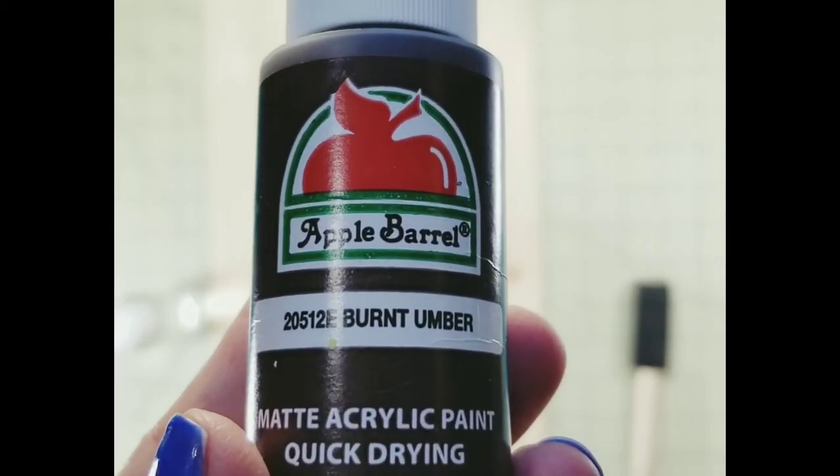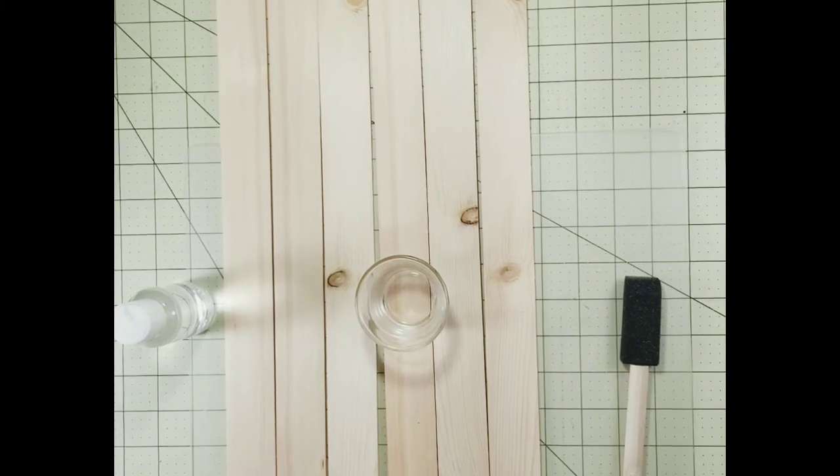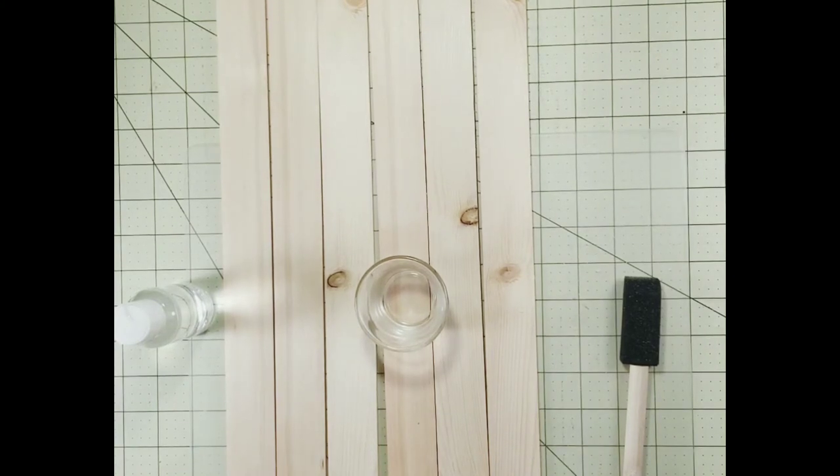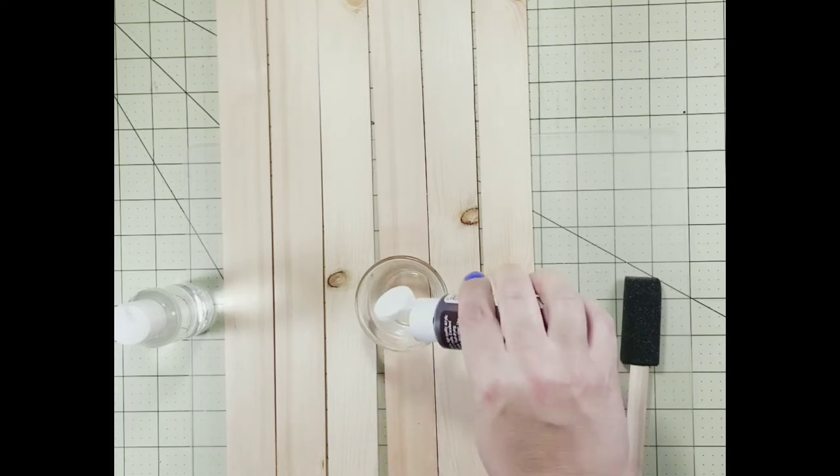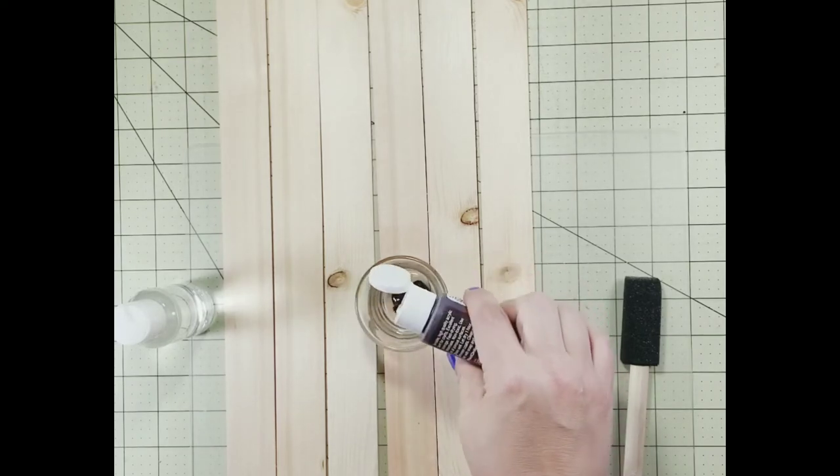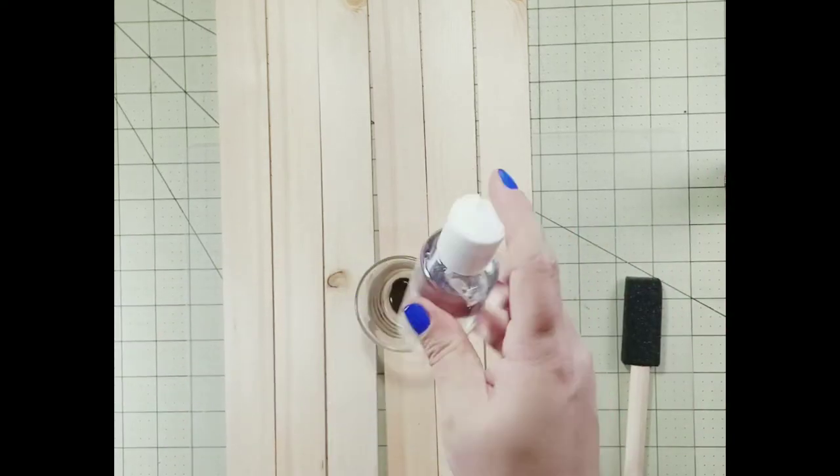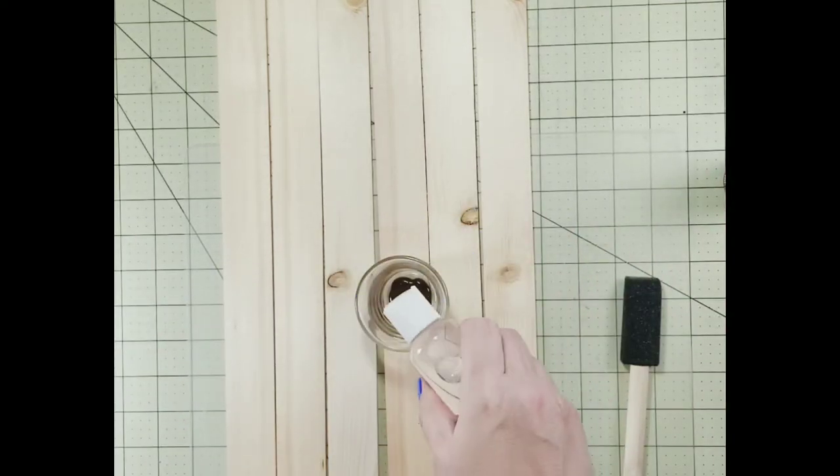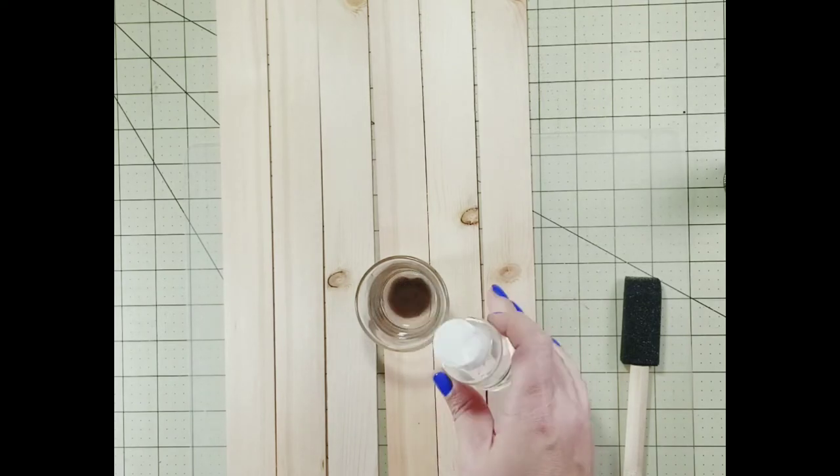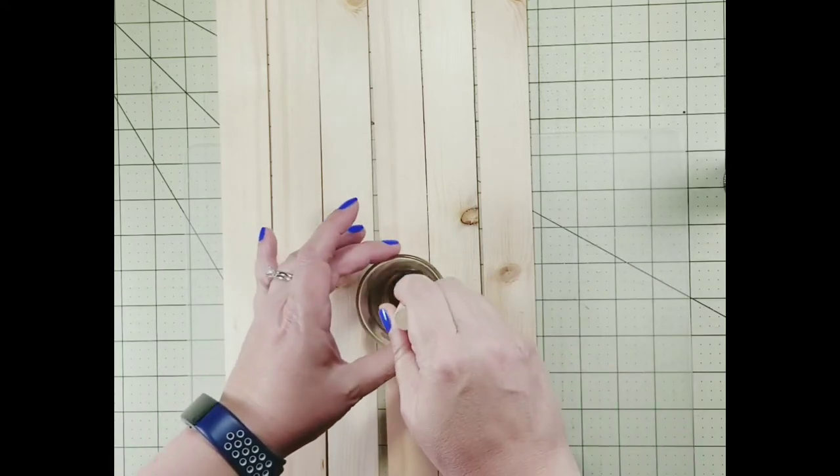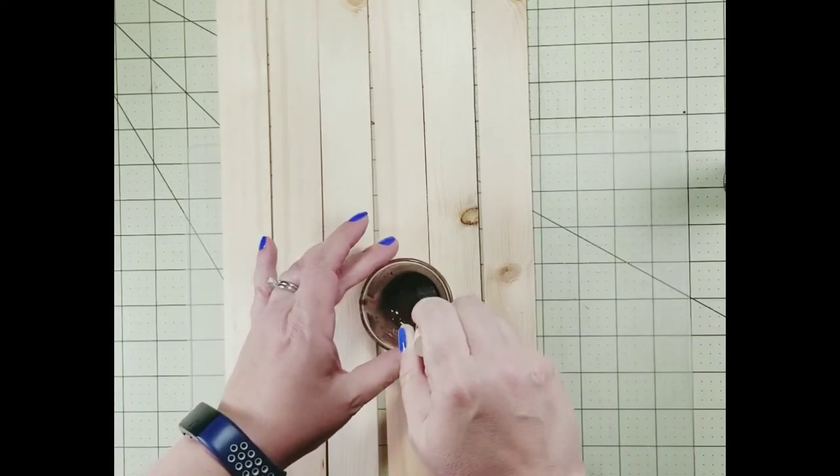We're going to take this Apple Barrel paint in Burnt Umber and we're going to add a little bit to a dish. We're also going to add some water to make a wash for our wood. Basically it's a faux staining technique, wood staining technique, a lot less messy than actual wood stain and it is a pretty cool effect. It allows the wood grain to show through and all those little knots and pieces without all the trouble of wood stain.